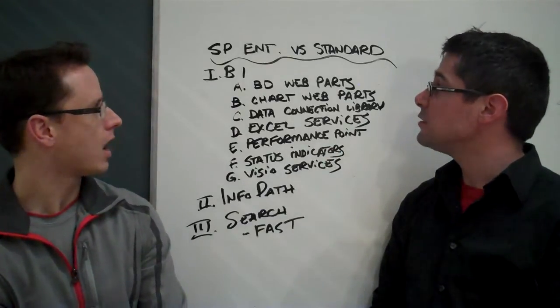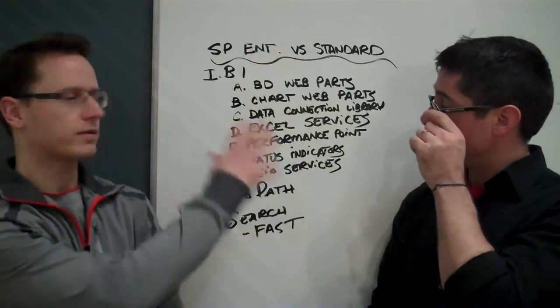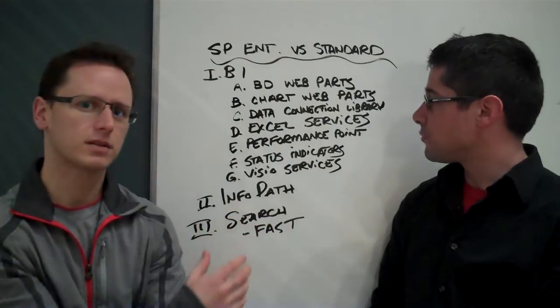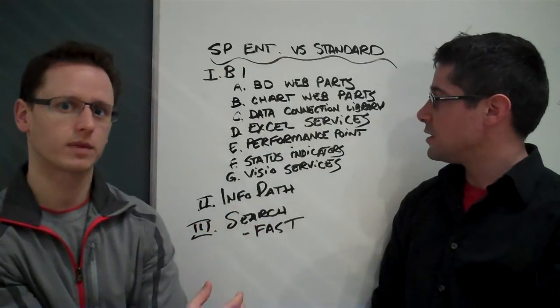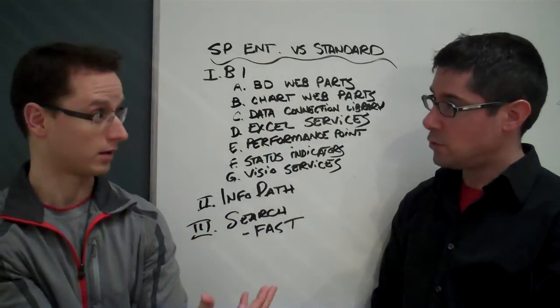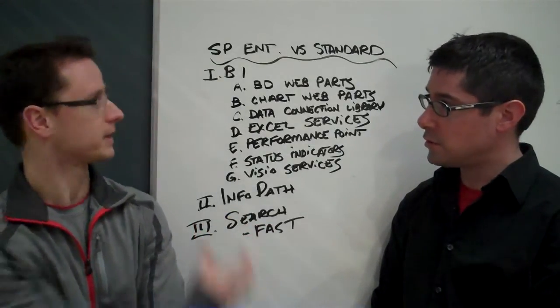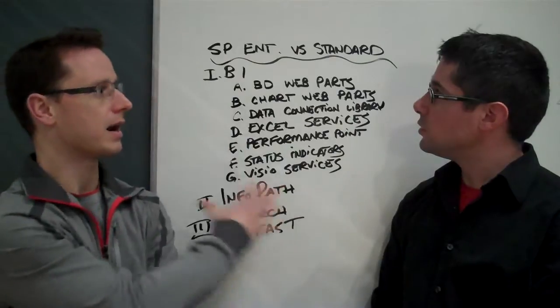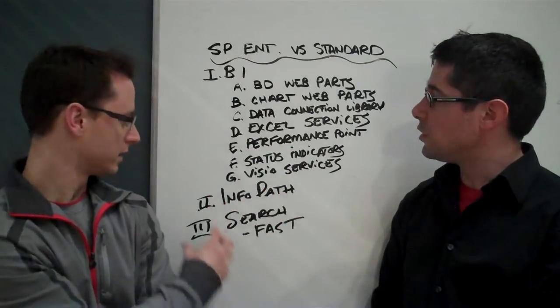Three of my favorite things. Okay, there are a few more than three, but I think you can bundle them up this way. Number one, you said it was BI — I kind of grouped a lot of the pieces that are missing out of SharePoint Standard, that are included in SharePoint Enterprise, into a BI bucket.